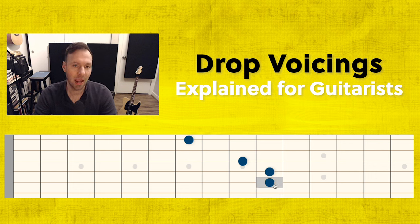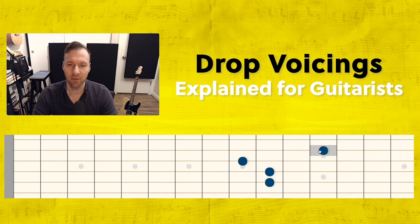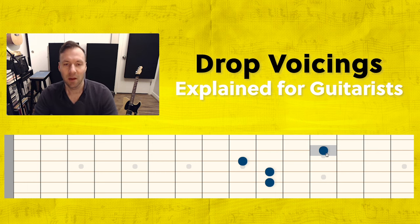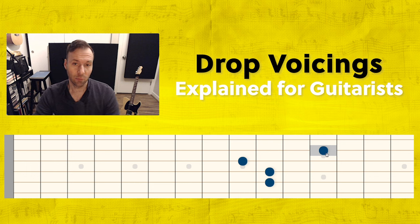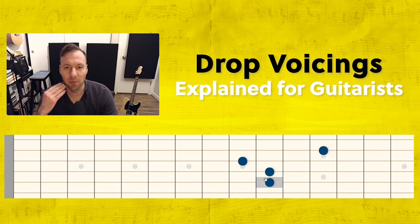Now we have another voicing of this C major seven. It was a close position voicing and now it's an open position voicing because not everything is as close together as it can be. That's totally playable. We might be more familiar with it if we move this B note over here - that's a bit of a pinky stretch, but that's a common voicing, a common shape that is an inversion you'll find rather familiar.